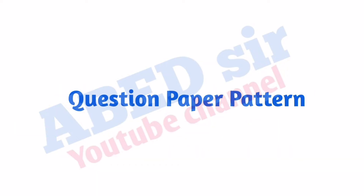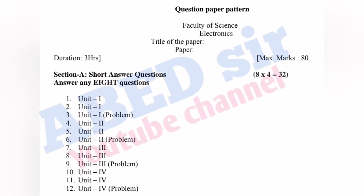This question paper has two parts: Part A and Part B. In Part A, short questions will be asked — three questions from each unit. Total 12 questions will be asked. Out of 12, you have to answer any 8, and each one carries 4 marks. So, 8 times 4 gives you 32 marks from Part A.